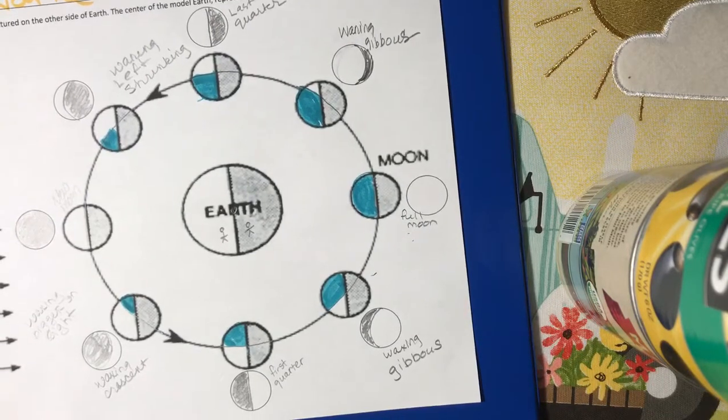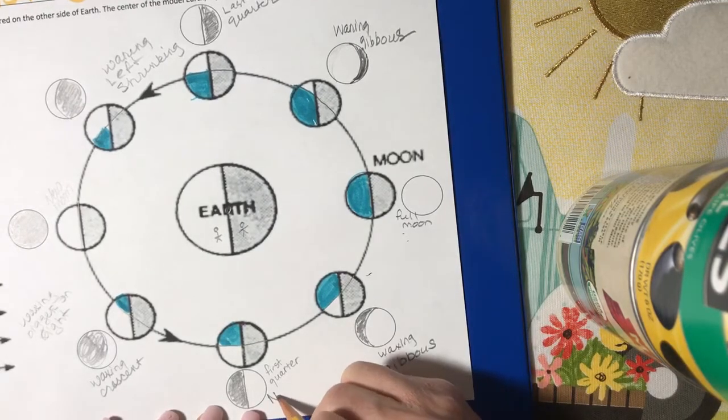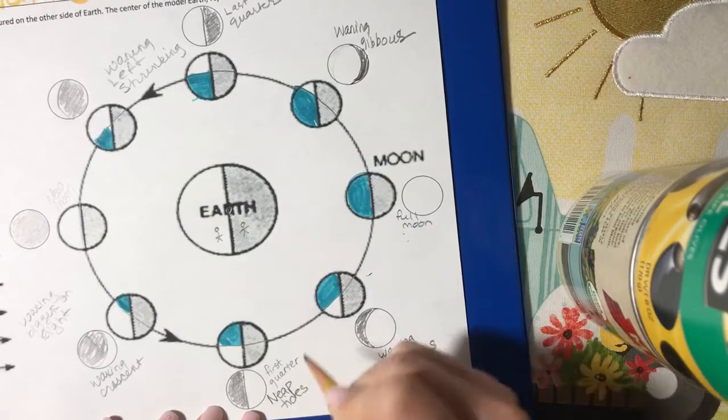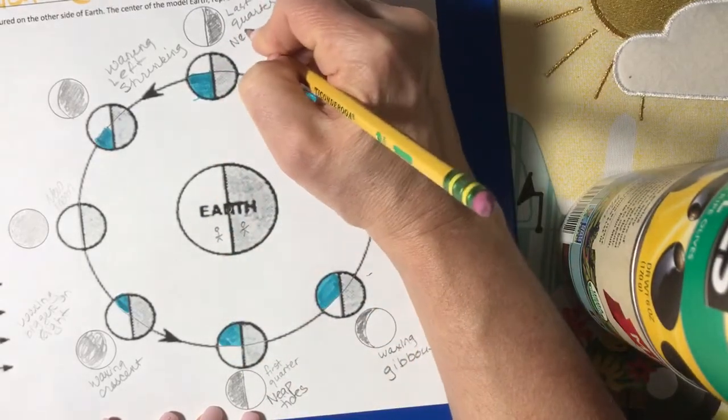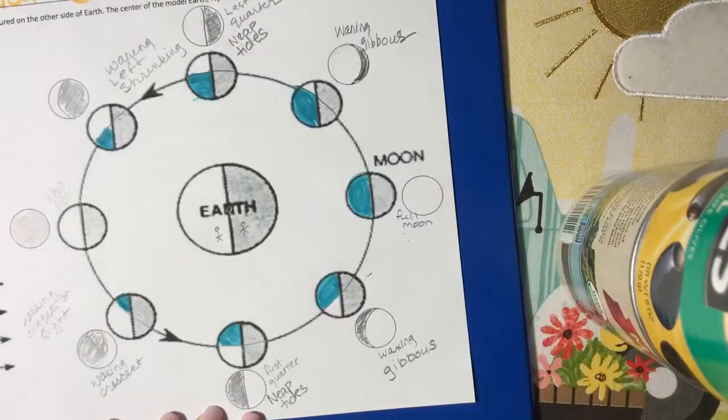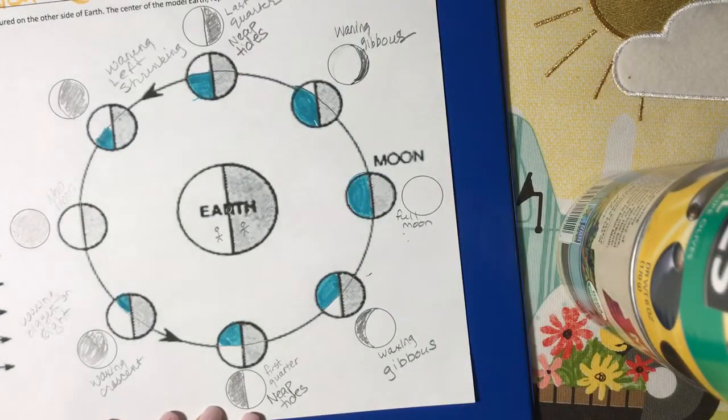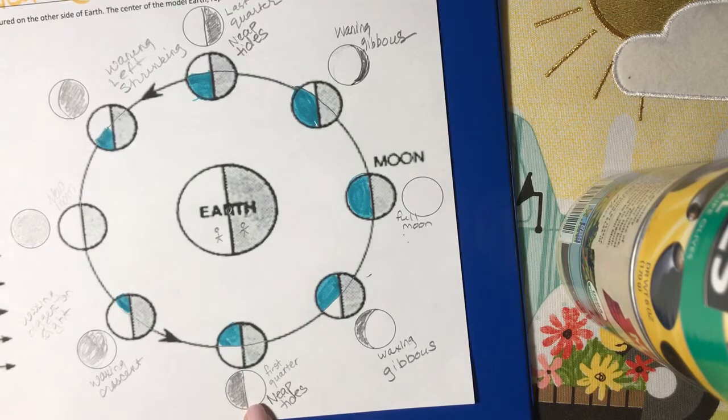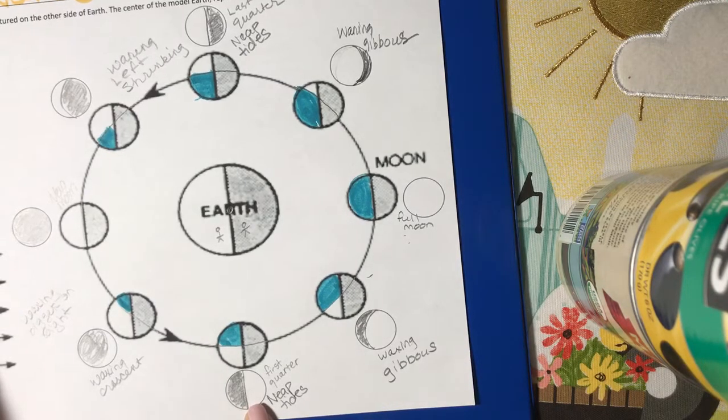So here's your moon phase diagram. A couple things to remember. This is where you have your neap tides. And your neap tides, you have your high tide and low tide are almost even because the moon and the sun are pulling on the earth's water.